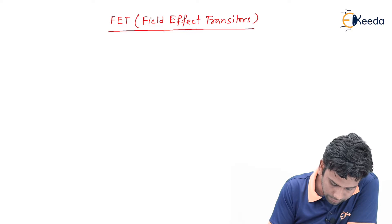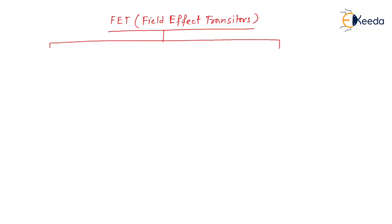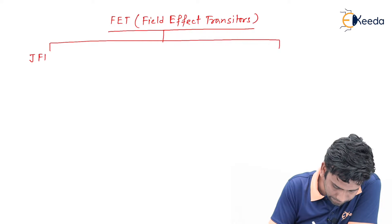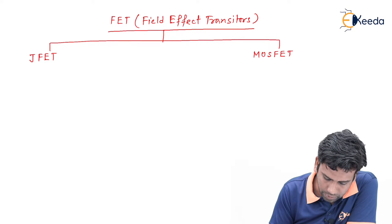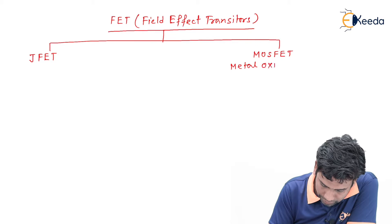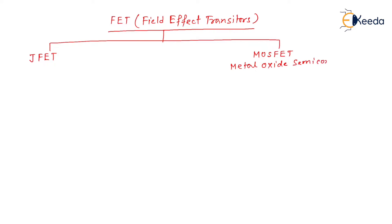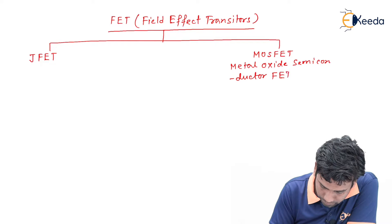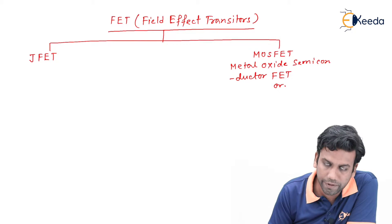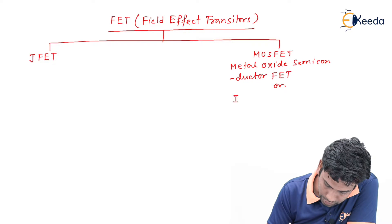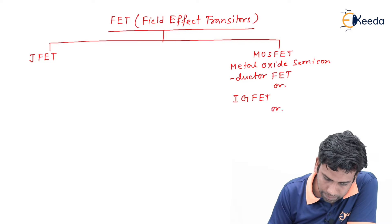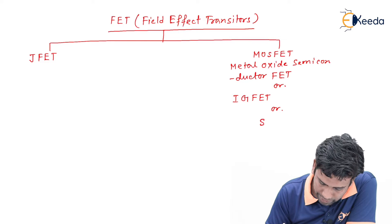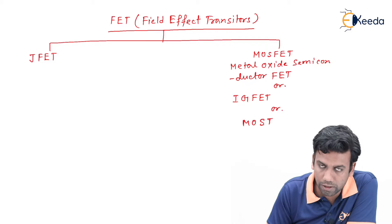These field effect transistors are of two types. The first one is junction field effect transistor, and the second one is MOSFET — metal oxide semiconductor field effect transistor, or metal oxide semiconductor FET. This MOSFET also has other names: insulated gate FET, and metal oxide semiconductor transistor or MOST.